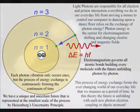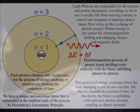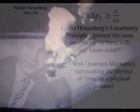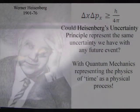Each photon oscillation or vibration only occurs once, but the process of energy exchange as a whole is forming the probability and uncertainty of life.